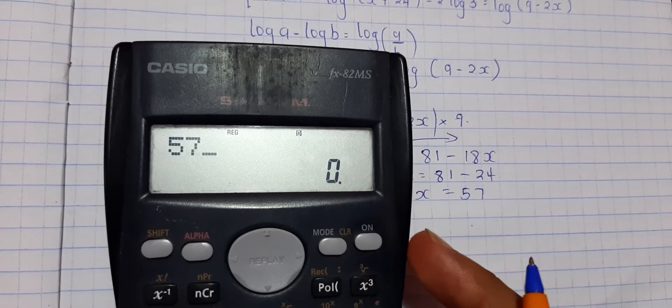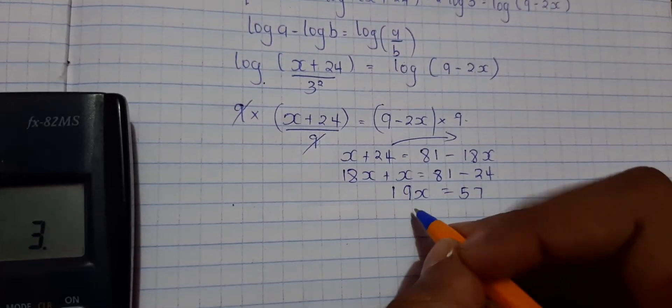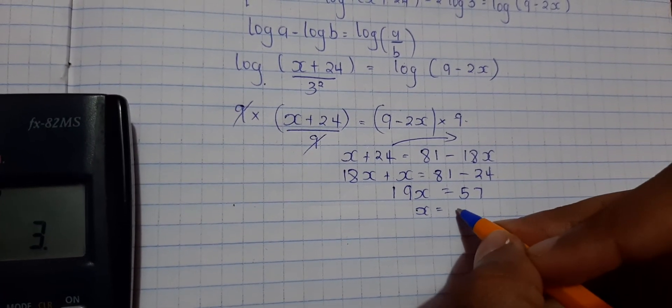So 57 divided by 19 is equals to 3, so x is equals to 3.